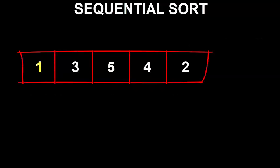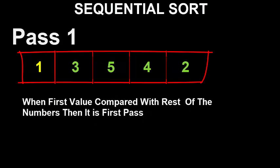We compare 1 with rest of the numbers, that is 3, 5, 4, 2. We assume 1 to be the lowest of all numbers, hence position it at 0th element. Because it is the lowest value, there is no interchange of numbers. So sequence of numbers remains same.